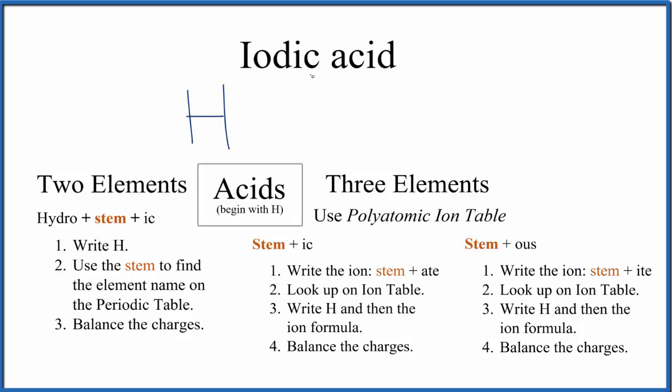Next, when we look at iodic acid, we don't see the term hydro in front, so it's not going to be two elements. We're going to have three elements, and it'll involve a polyatomic ion. We'll look at the stem, that's the IOD, and then the ending IC. So stem plus IC. We're going to use these guidelines to write the formula for iodic acid.